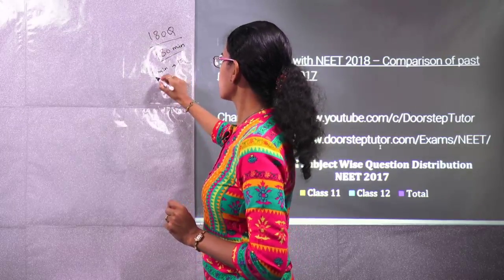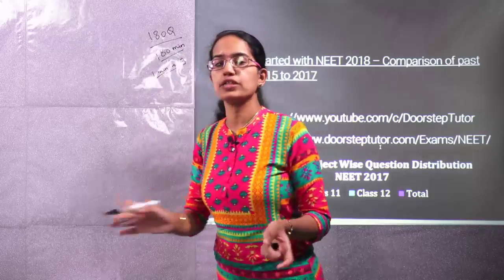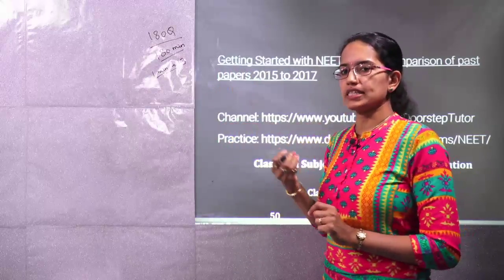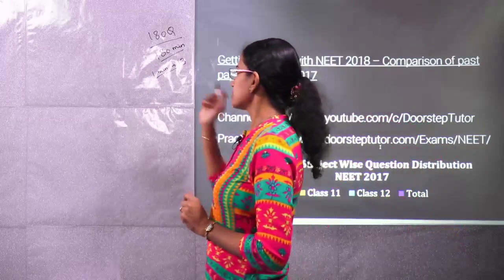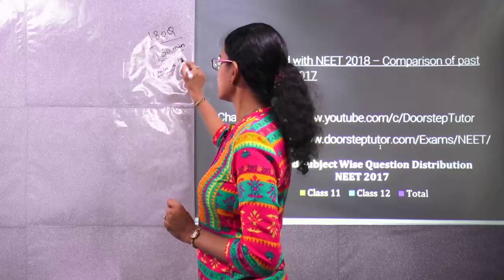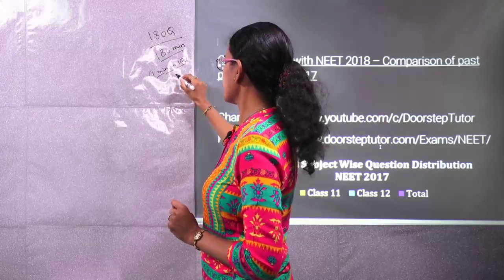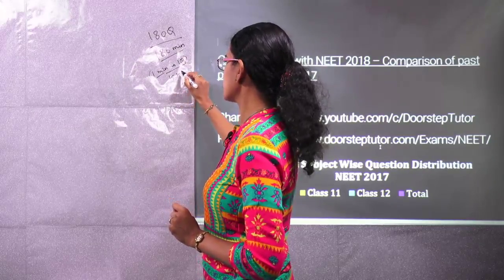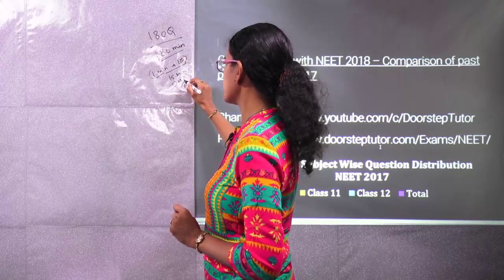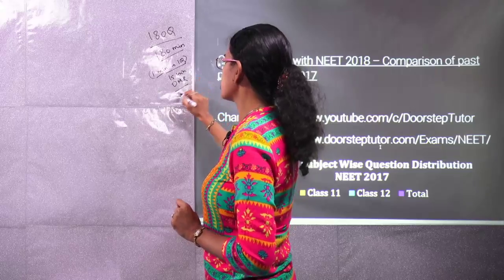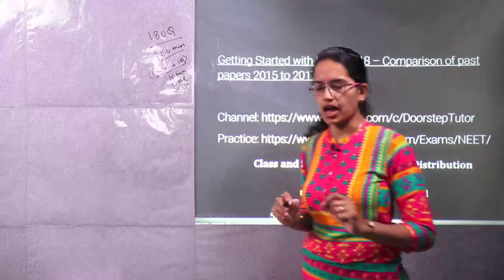This 1 minute per question is too much for biology, but definitely when it comes to chemistry or physics, this might sound less. You must also save 15 minutes towards the end to fill your OMR sheet and you should not run out of time for that.